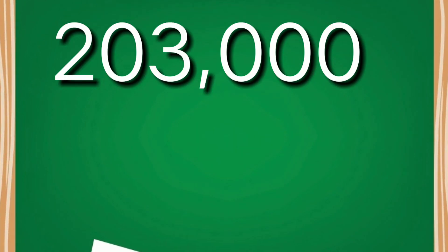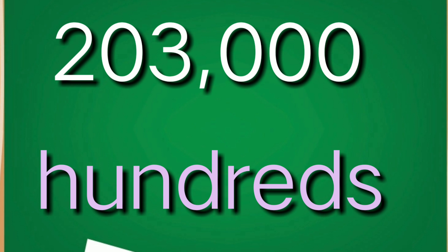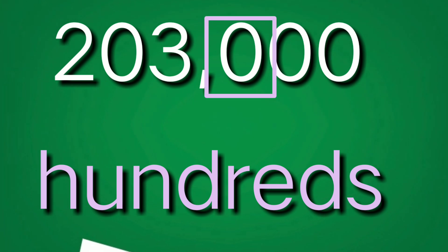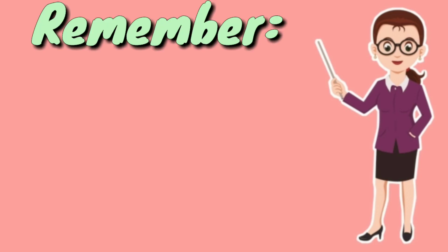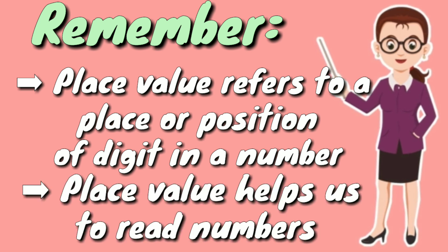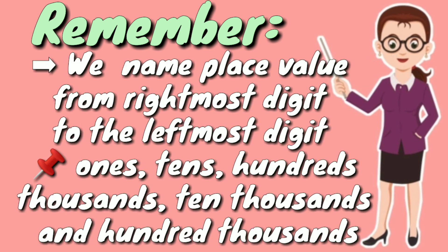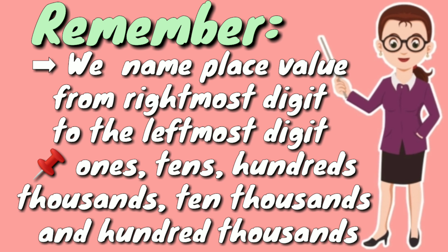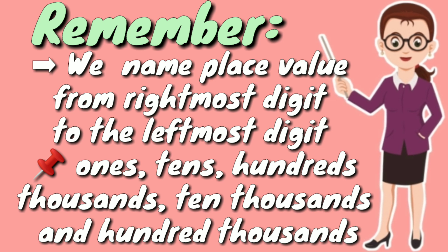Next, we have two hundred three thousand — the given place value is hundreds. The answer is zero. So remember: place value refers to the place or position of a digit in a number. Place value helps us read numbers. We name place value from the rightmost digit to the leftmost digit, following the order: ones, tens, hundreds, thousands, ten thousands, and hundred thousands.